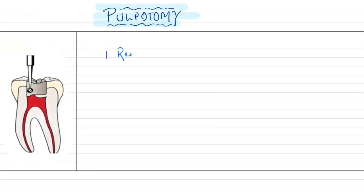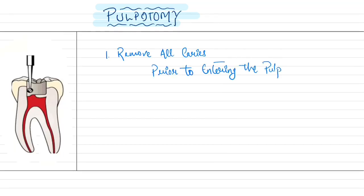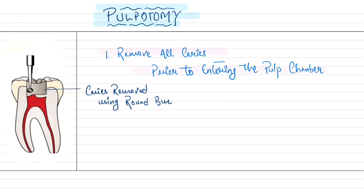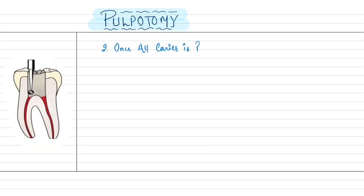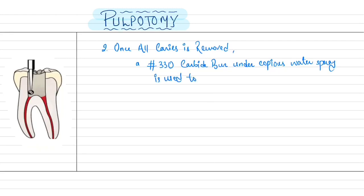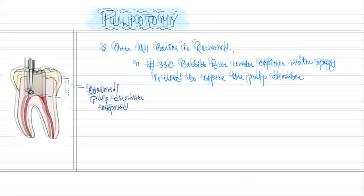For the pulpotomy procedure: the first step is to remove all caries present prior to entering the pulp chamber, using a round burr. The second step — once all caries is removed — is to use a 330 carbide burr under copious water spray to expose the pulp chamber and remove the coronal pulp.